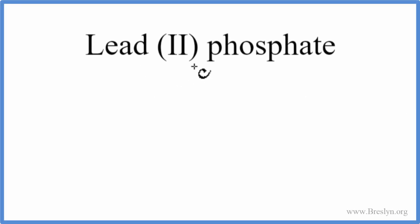To write the formula for lead(II) phosphate, we look up lead on the periodic table. It has an element symbol of Pb. Phosphate is not on the periodic table—that's a polyatomic ion. It ends in -ate, so you either need to have it memorized or look it up on a table of common polyatomic ions.